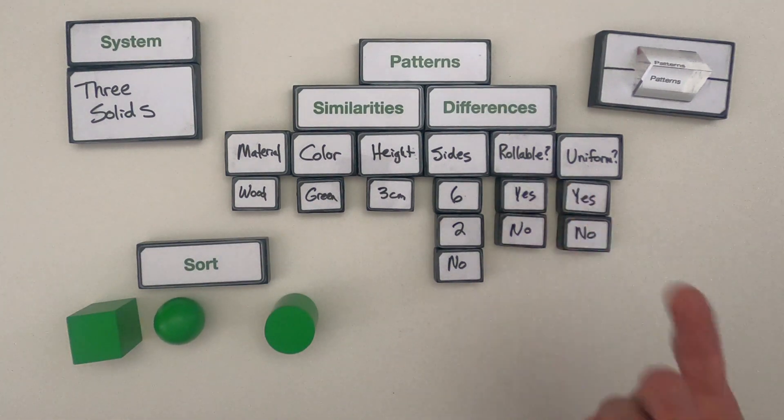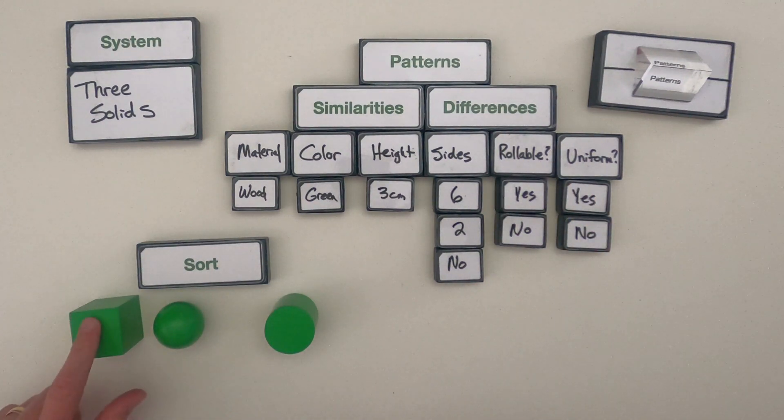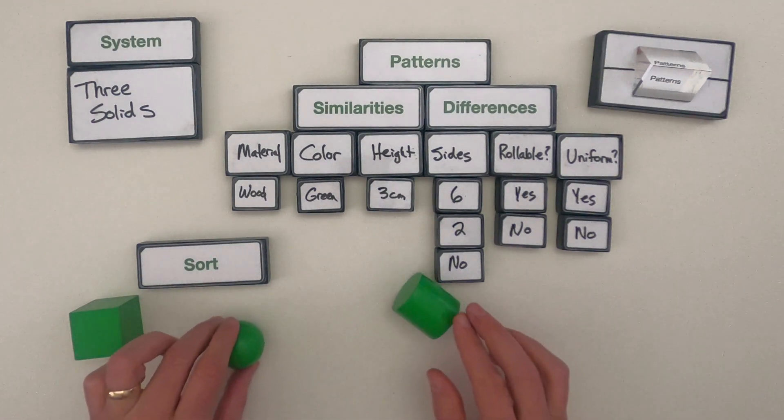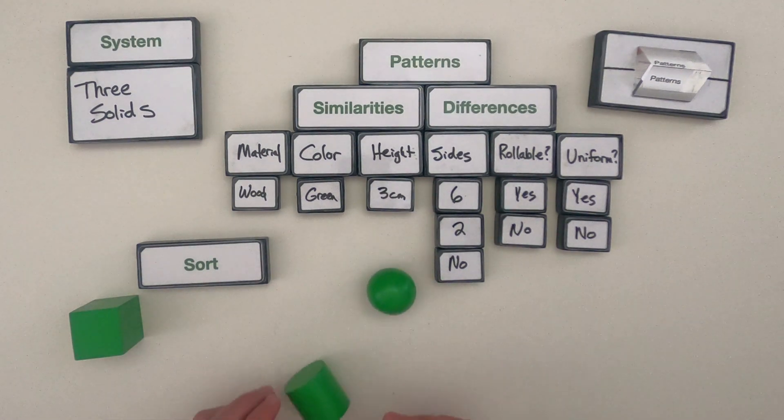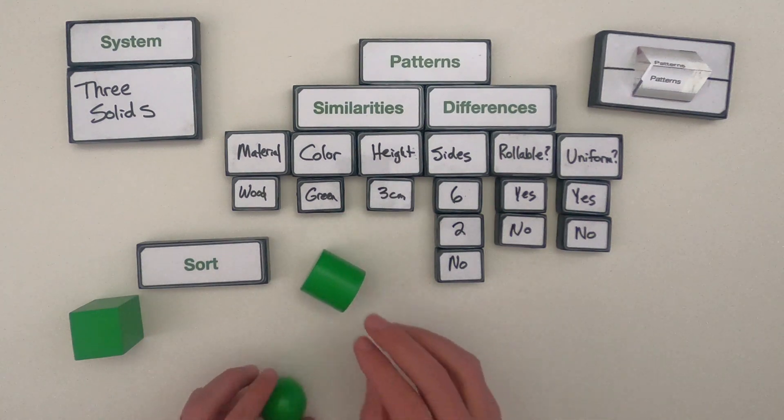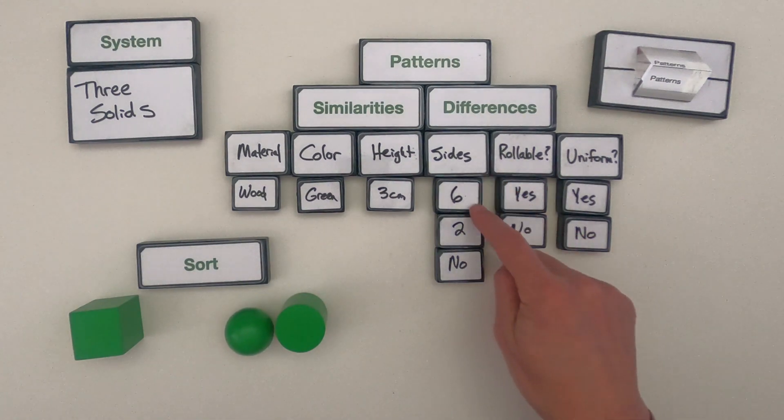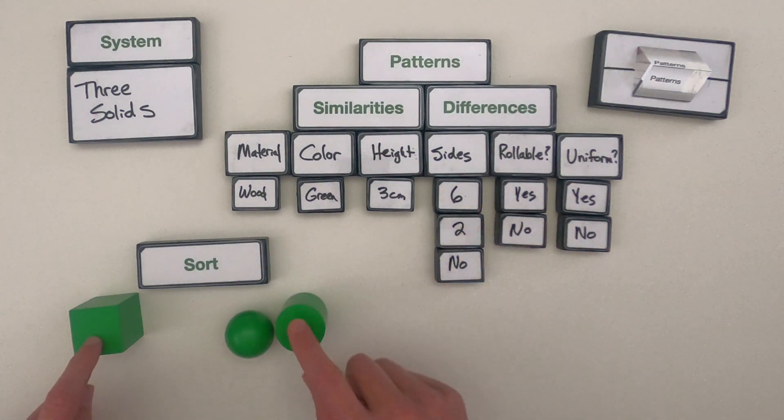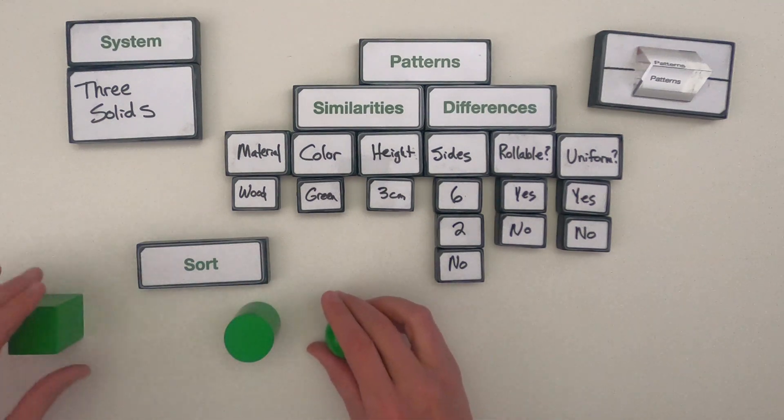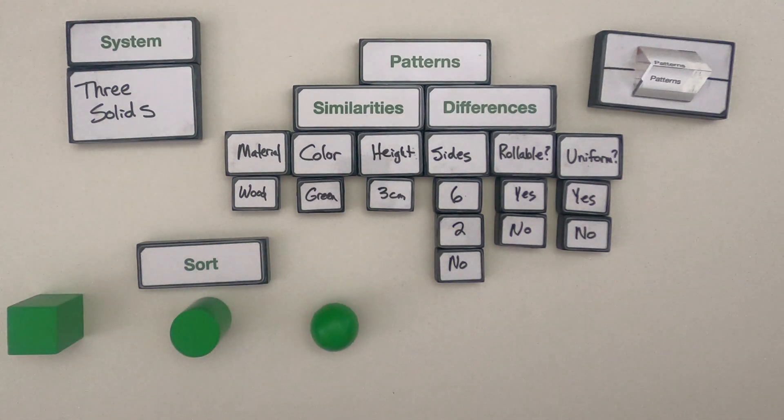I could also look at are they rollable or not? So a cube is not going to be rollable but a cylinder and a sphere are. And there's something about the way that a cylinder rolls versus a sphere that tells me a little bit more about it. Or the number of sides. So we go from a cube that has six sides to a cylinder that has two and then a sphere that has no sides. So that'd be another way to sort it.